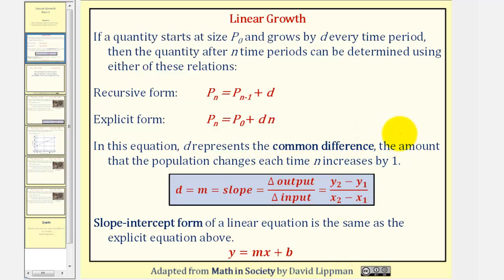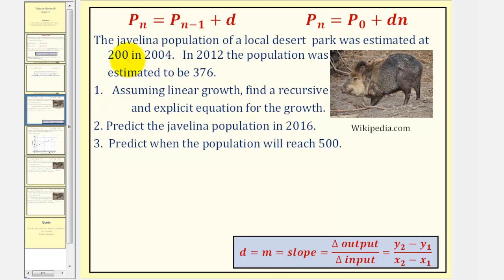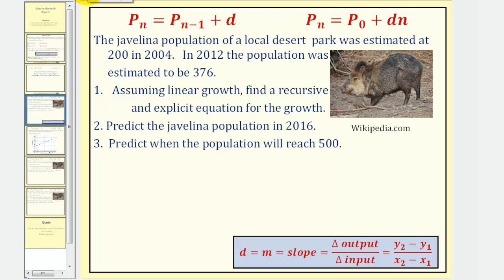Let's take a look at an example. The Javelina population of a local desert park was estimated at 200 in the year 2004. In 2012, the population was estimated to be 376. One, assuming linear growth, we want to find a recursive and explicit equation for the growth. Two, we want to predict the Javelina population in 2016. And three, predict when the population will reach 500. Notice for both formulas, we'll have to find the common difference d, which would also be the slope of the line.